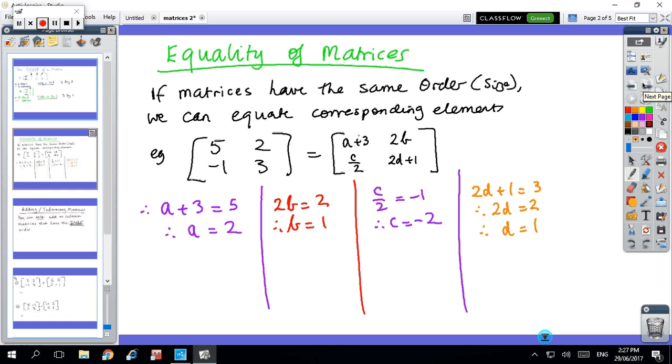First thing is equality of matrices. If matrices have the same order, then we can equate corresponding elements. For instance, I've got a two by two and I've got a two by two. So these two matrices are equal by definition, and we can set up equations.